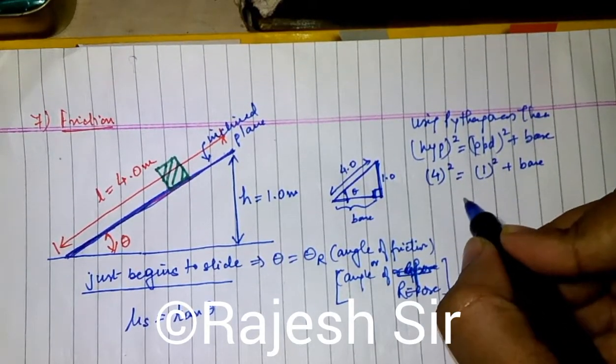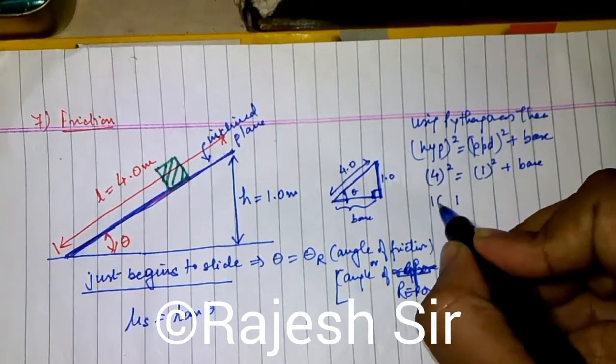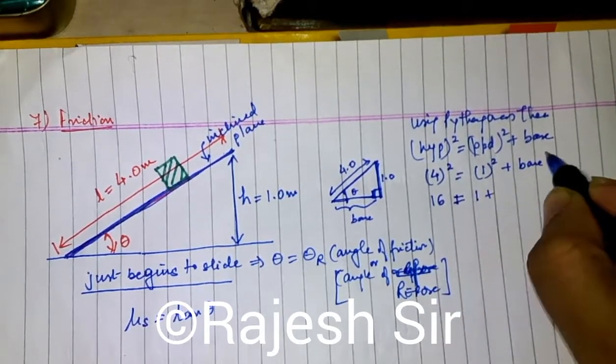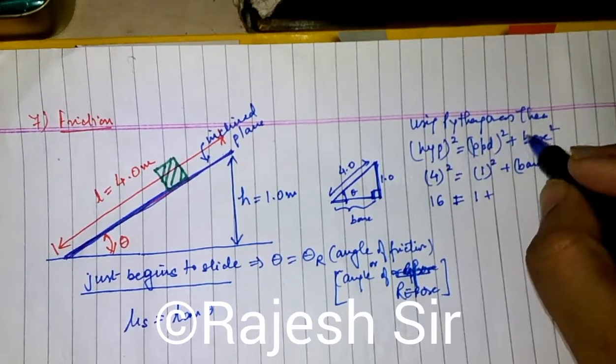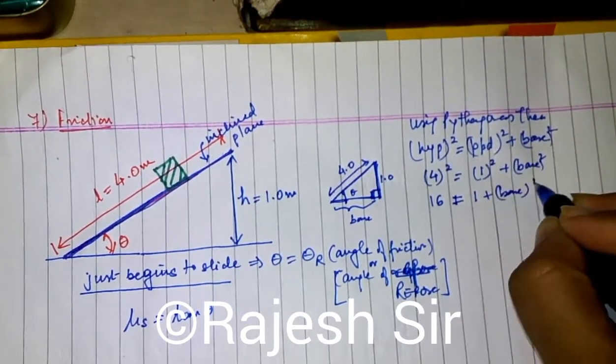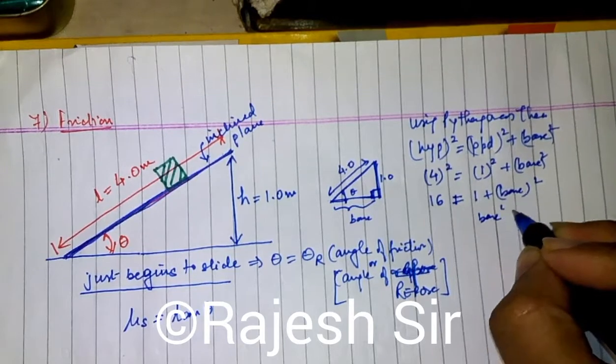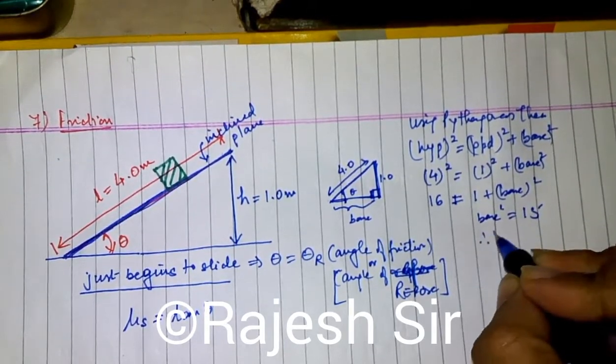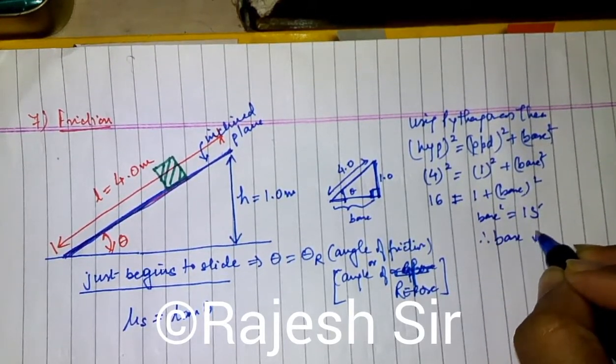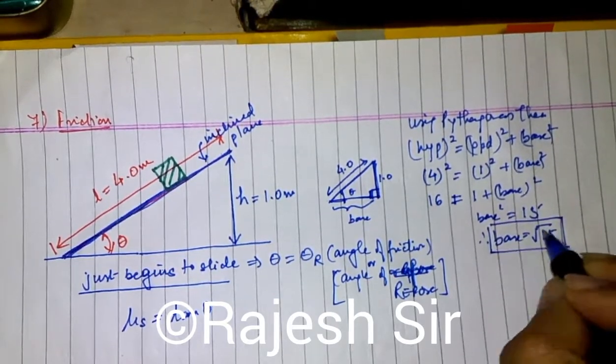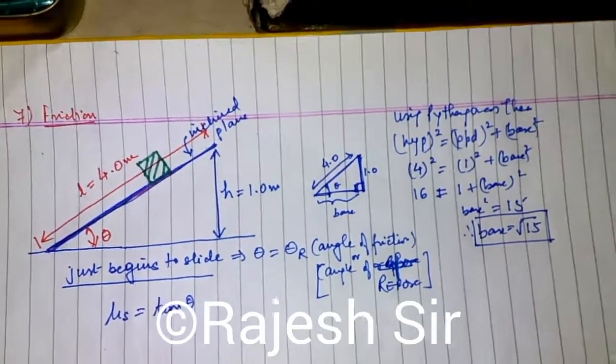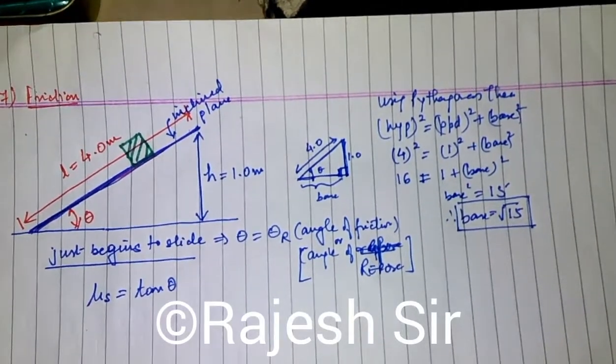So, 16 is equal to 1 plus base square. Base square becomes 15. Therefore base ki value, friends, root of 15. So we found the base of the right angle triangle, which is root of 15.